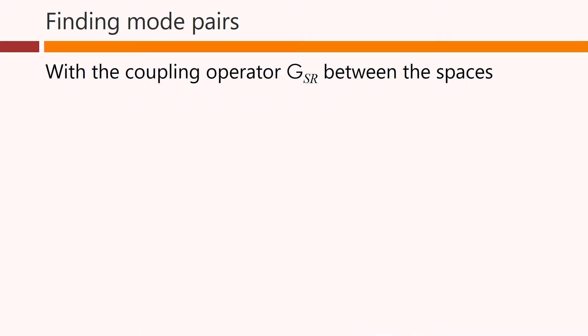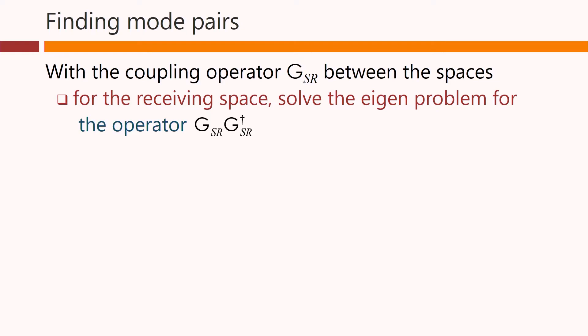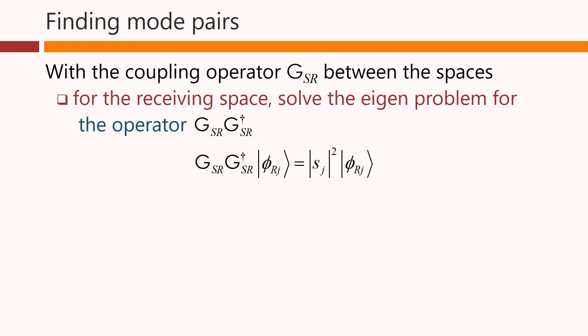With the coupling operator G_sr between the spaces, for the receiving space, we solve the different eigenproblem for the operator G_sr G†_sr. So we've swapped them around in order here. So we solve that to get an orthogonal set of wave functions, φ_rj, that are in this other receiving Hilbert space H_r. Note, incidentally, that these two problems have the same positive eigenvalues, the modulus squared of this number S_j.